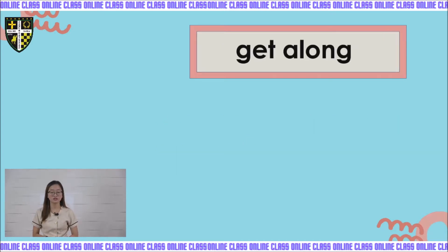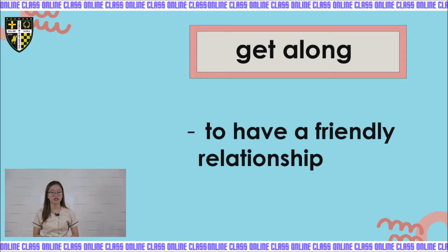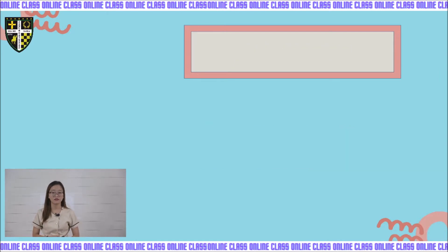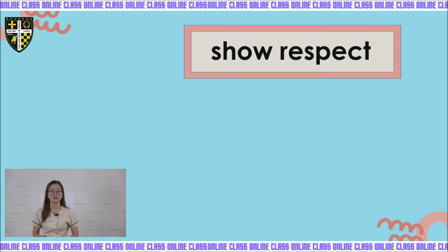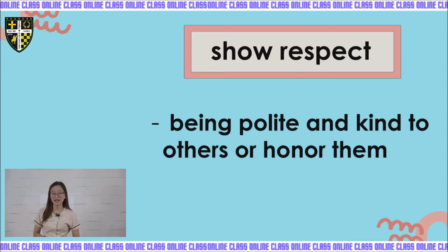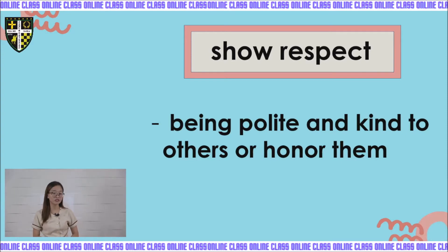Next one is to get along. What is the meaning of get along? To have a friendly relationship. Even though, kids, we are not seeing each other physically, but we can get along by seeing our classmates in online sessions. We can make friends through online sessions. Next one is show respect. Show respect is being polite and kind to others, or to honor them. Like what we are doing to elders — we are respecting them. We show respect especially to our teachers, to our parents.